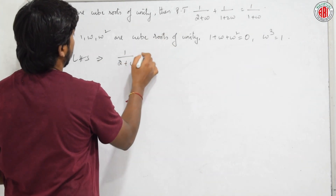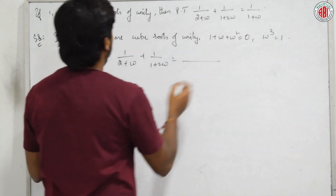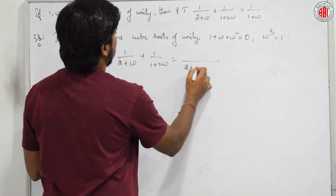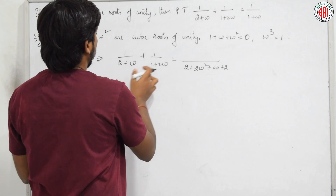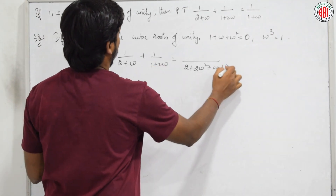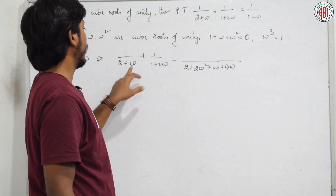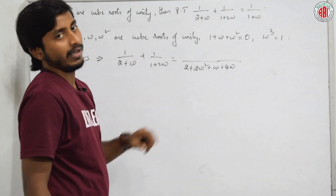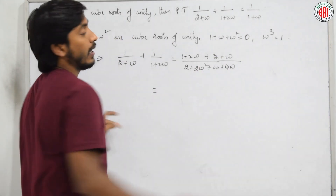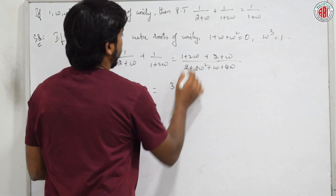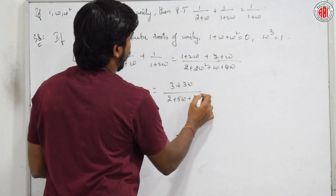Taking LHS: 1/(2+ω) + 1/(1+2ω). The LCM gives numerator (1+2ω) + (2+ω) = 3 + 3ω, and denominator (2+ω)(1+2ω) = 2 + 4ω + ω + 2ω² = 2 + 5ω + 2ω².